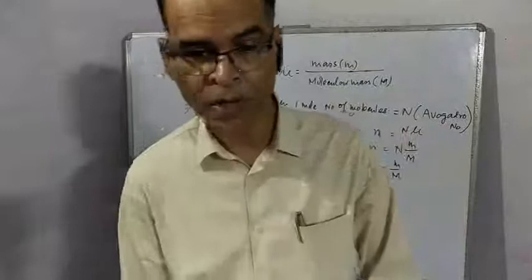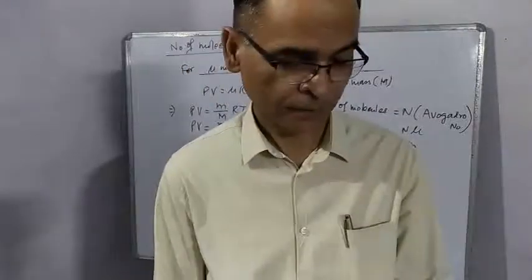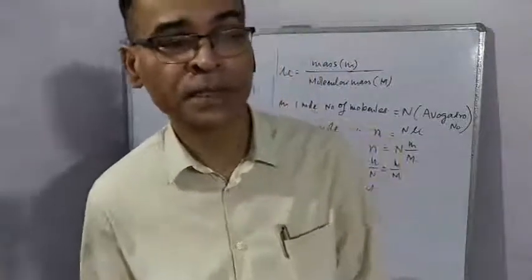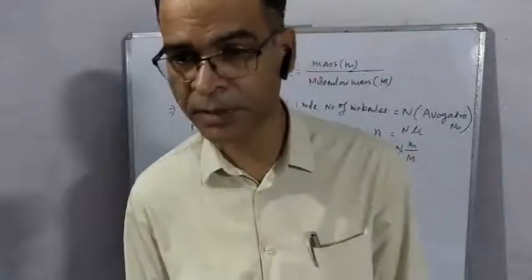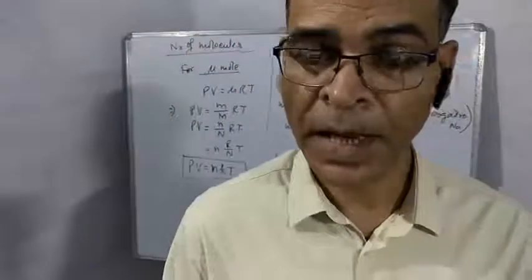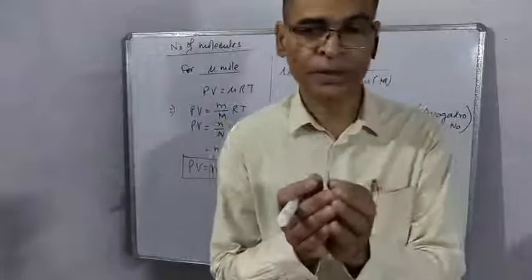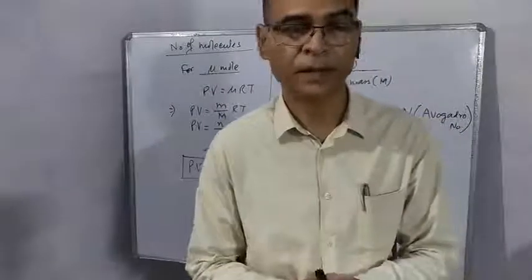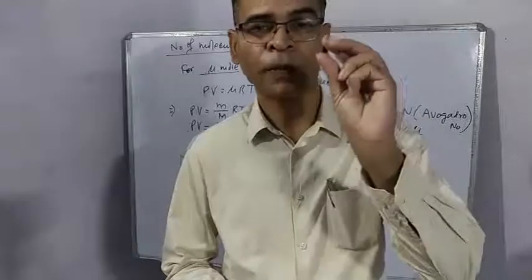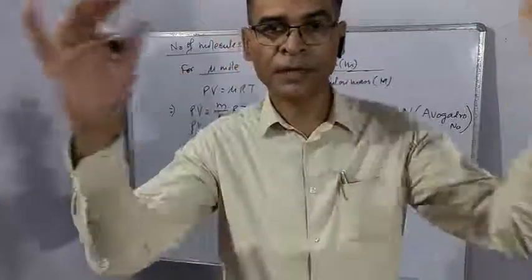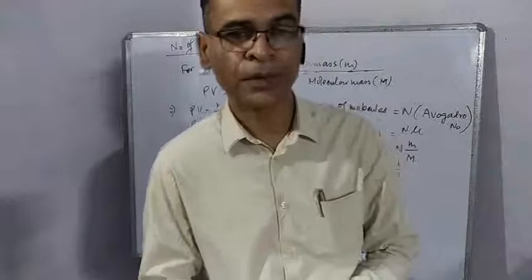Now there are some points of kinetic theory. These points are given in the book. First point is: all the molecules of a gas are identical and size of molecule is very small. Total volume of molecules is negligible with respect to volume of the gas. Suppose all the molecules are collected together, you occupy very small volume. And volume of gas is volume of vessel in which the gas is kept. So this volume is negligible with respect to volume of the gas.